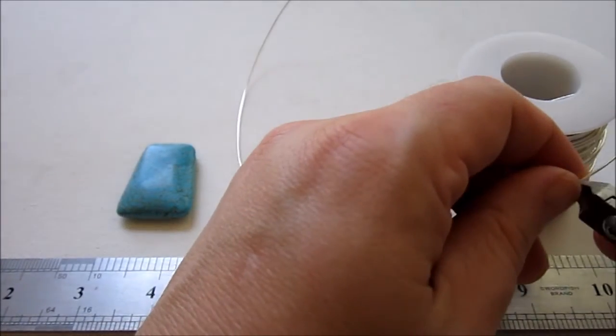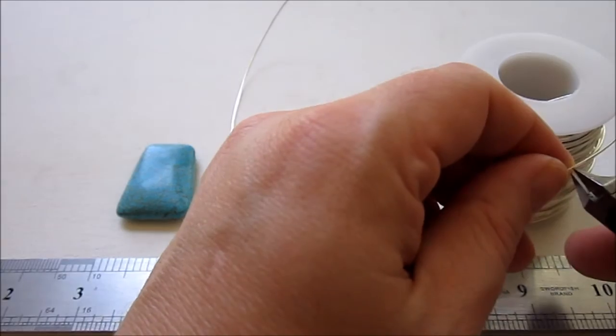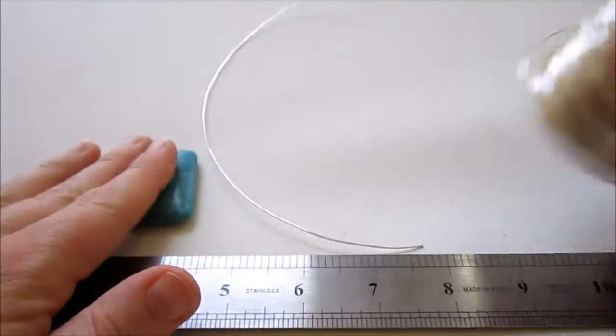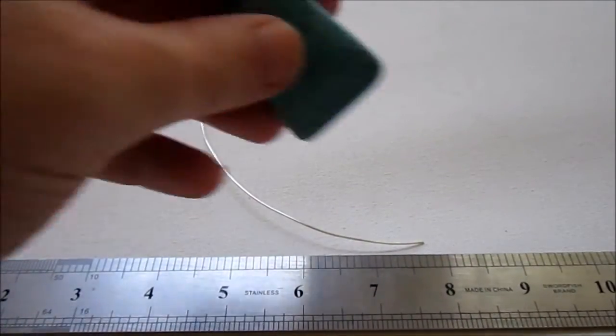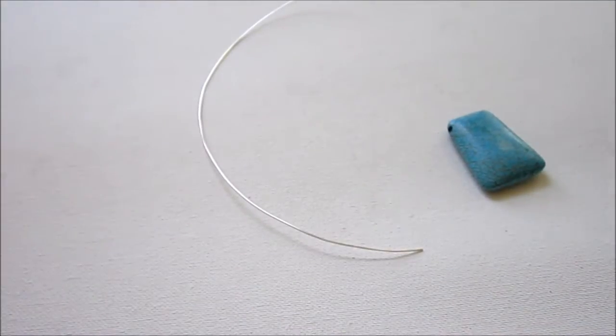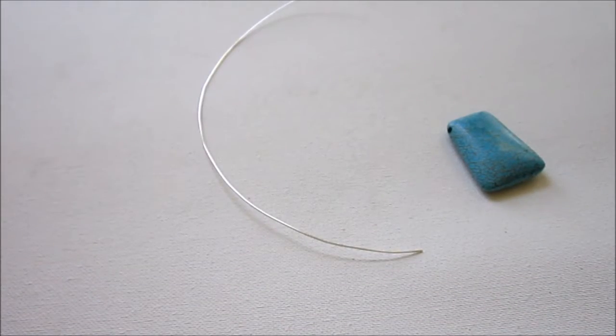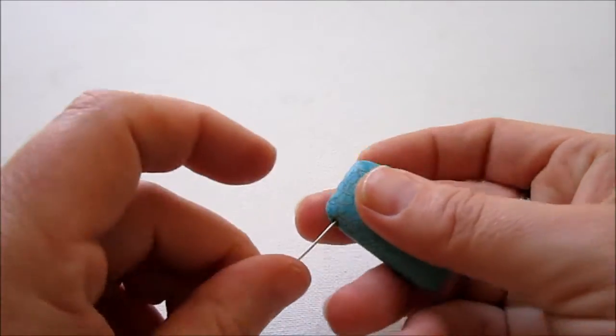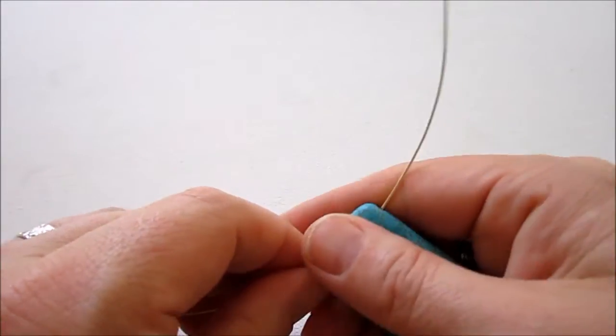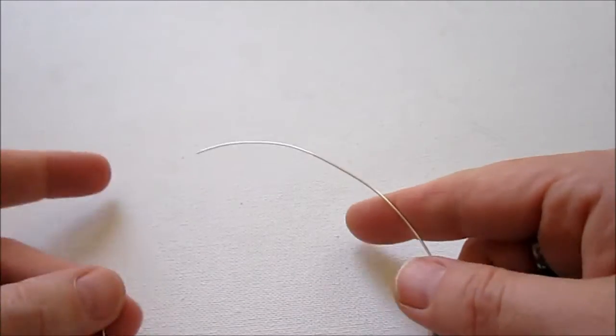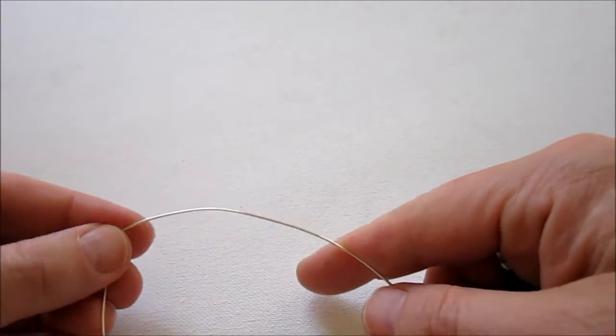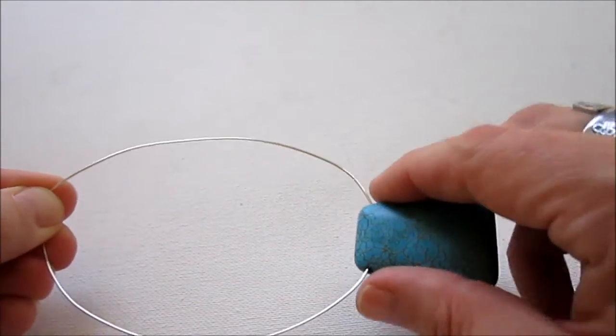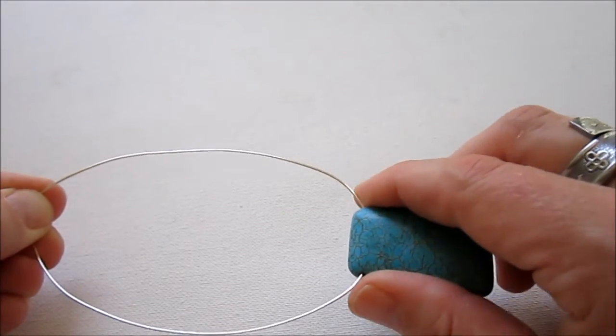This may vary depending on the size of your focal bead. Mine's about an inch across, so maybe that can give you a little bit of help deciding how long to cut your wire. And then we're just sliding this bead onto the wire.